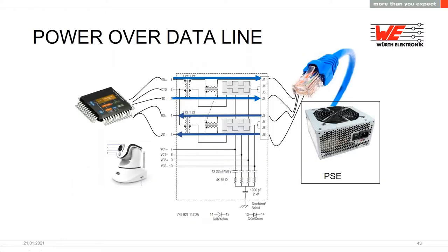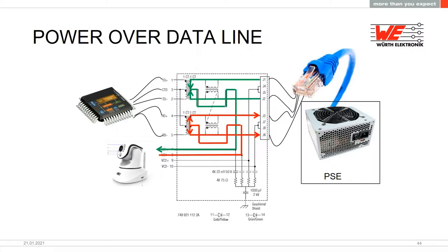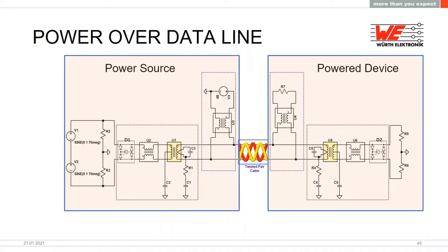In standard Power over Ethernet, the data signals are AC (changing current) and pass through the transformer. The power is a constant DC current and flows through the transformer's center tap to supply the device.